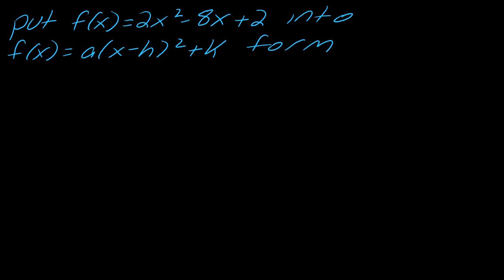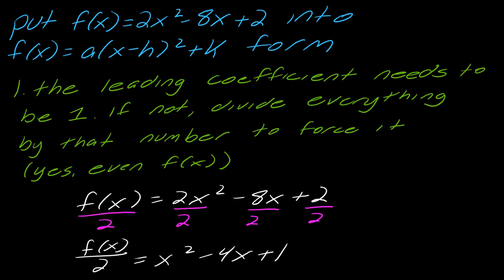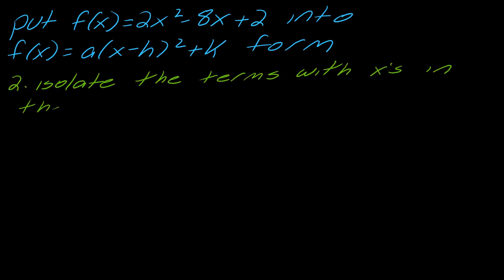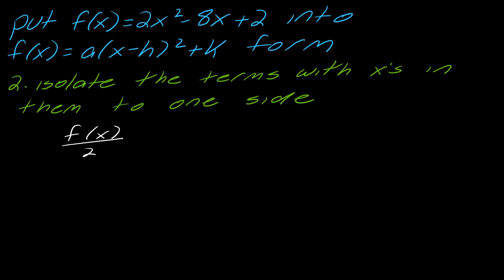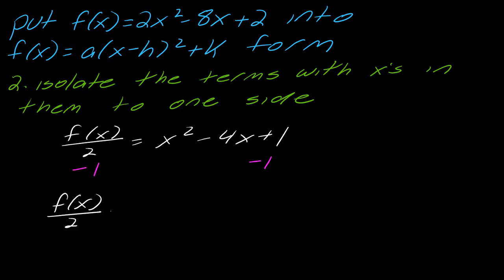The next step is to isolate the x terms. So in this case, this x squared and this 4x I want by themselves. I'll subtract one from each side. So I get f(x) divided by two minus one equals x squared minus 4x.